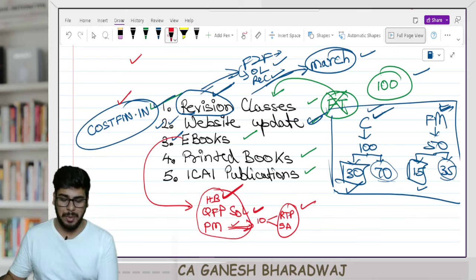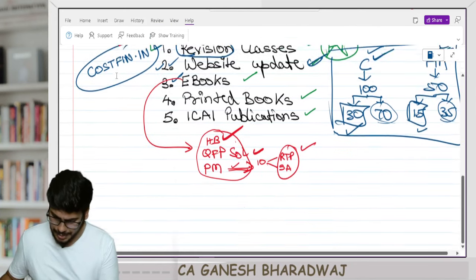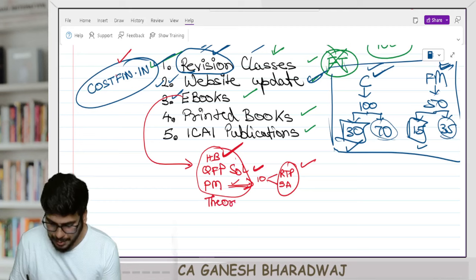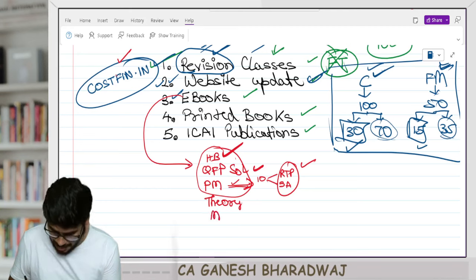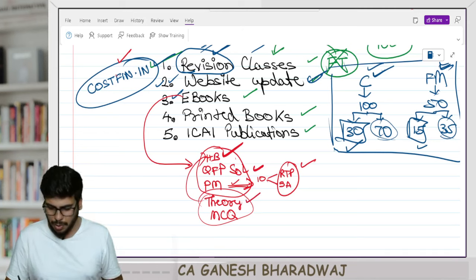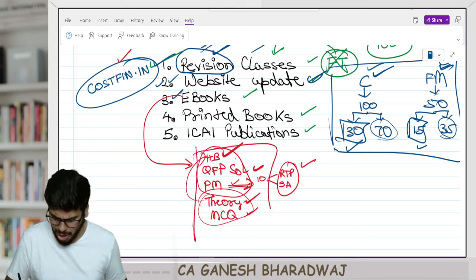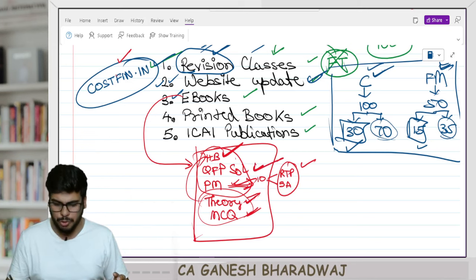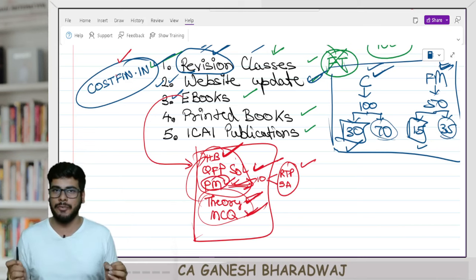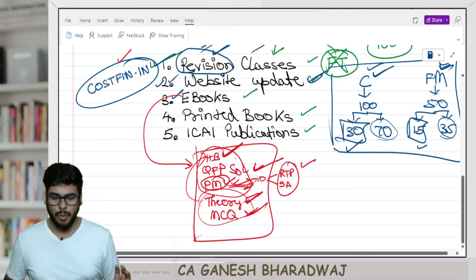Apart from the handbook, separately we are also planning to have a theory book and an MCQ book for costing and FM. These are already part of the handbook, but we are making them available separately for students who just want the theory notes or MCQs. Handbook, QFP solution book, theory, and MCQ books are already ready. The practice manual is taking a little more time due to the compilation work — it will be released in the next one to ten days, and you can download it absolutely free from our website.